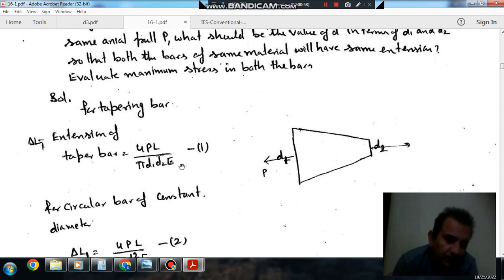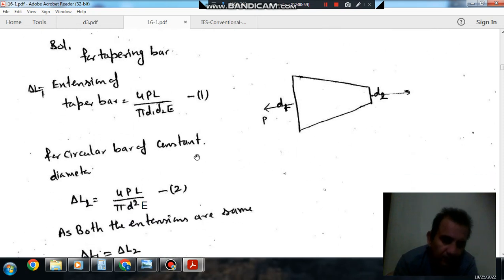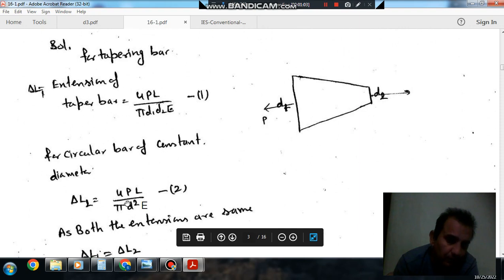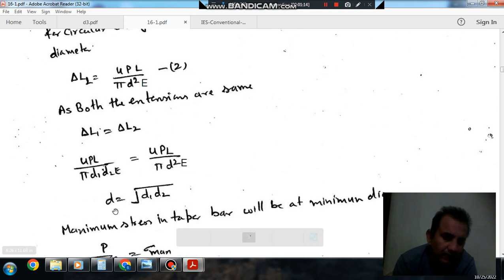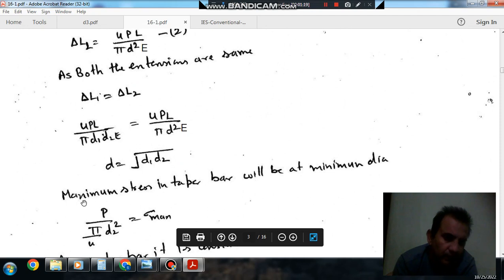And for a uniform diameter, the extension formula is P by area into L by E, or you can say 4PL divided by π d² E. So as extension of both the bars are equal, equating these two we can get d is equal to root d1 d2.